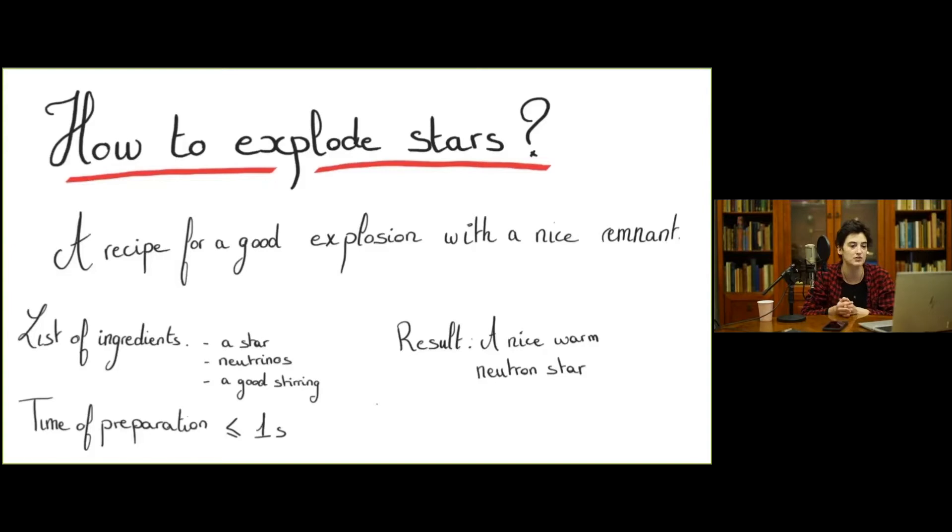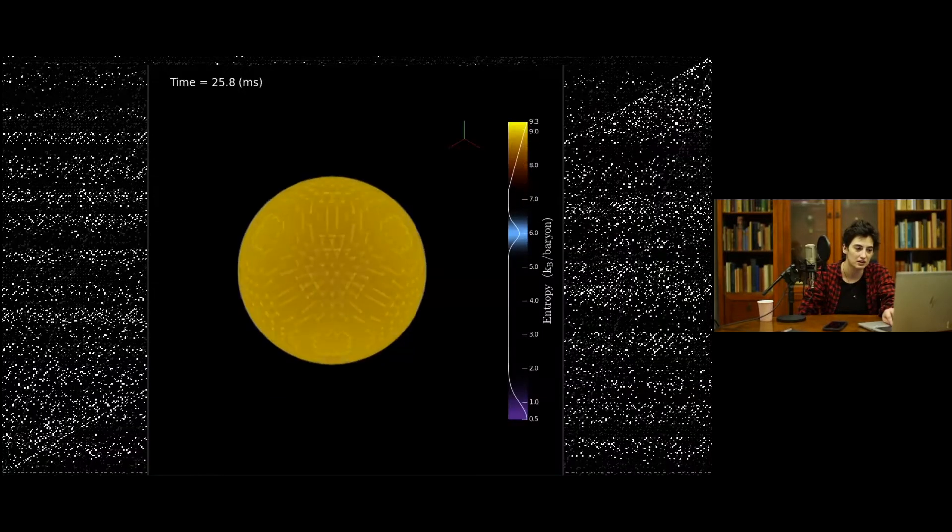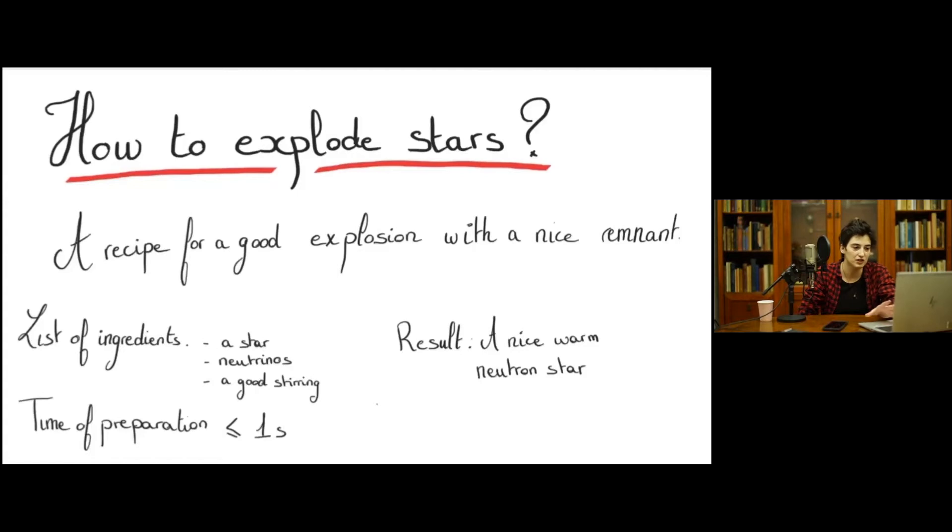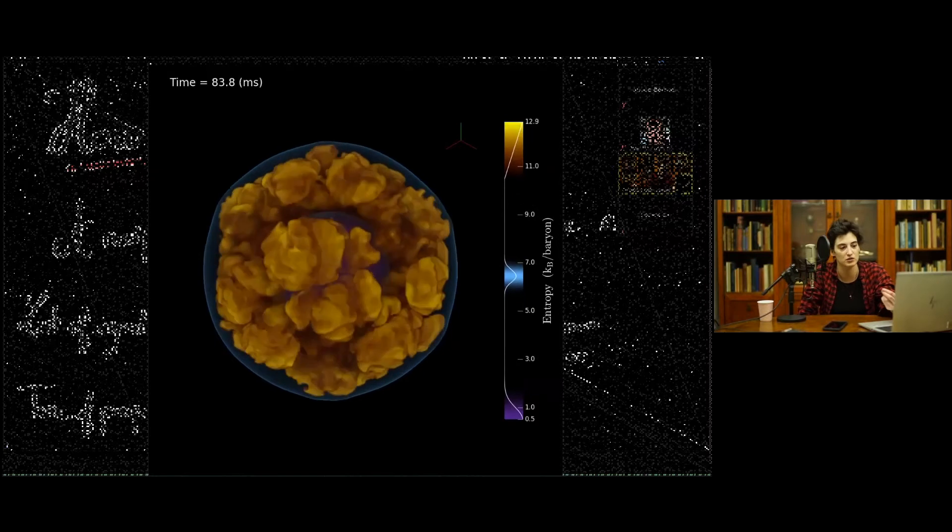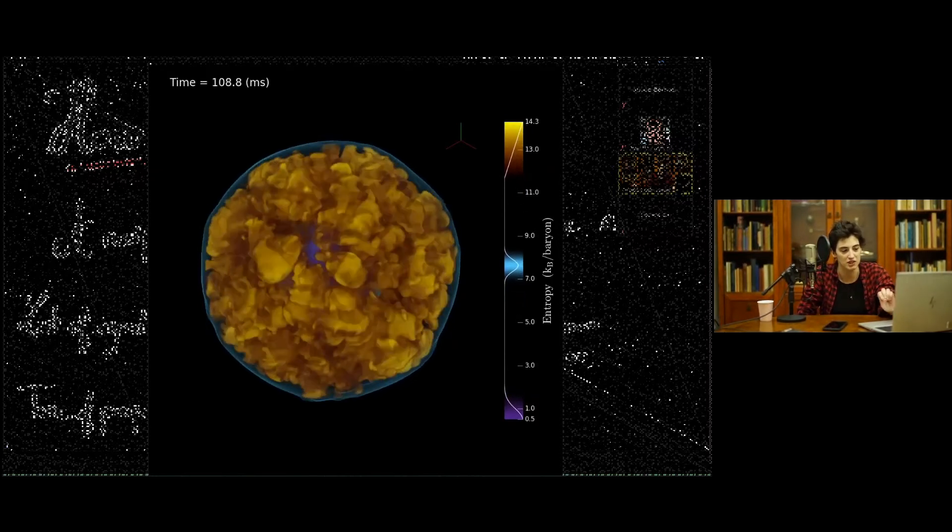We also need some neutrinos, those particles that barely interact with anything, but they're really important here. And you will also need to learn how to stir correctly your preparation. It should result in a nice warm neutron star, and the time of preparation is a bit less than a second actually. So I will first present you with a video of what is going on. Here on the video, you see in yellow is matter growing, in blue is a shock, and in dark blue in the middle is a neutron star.